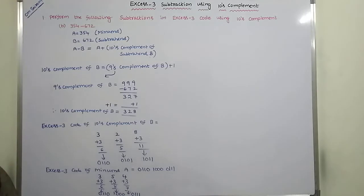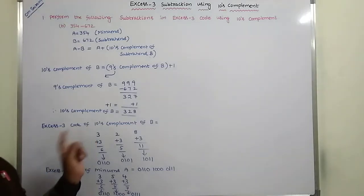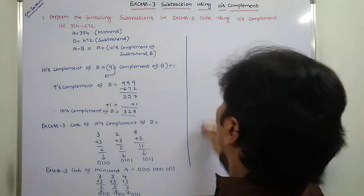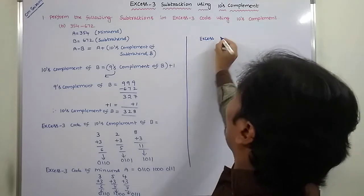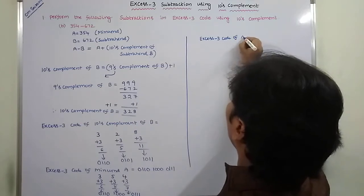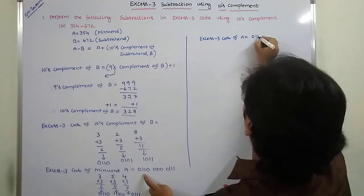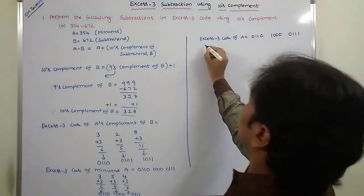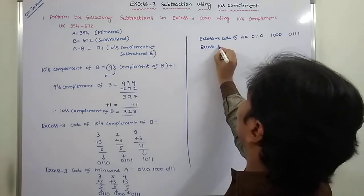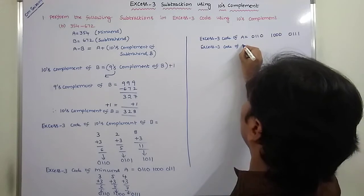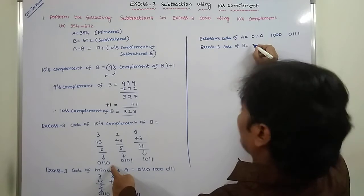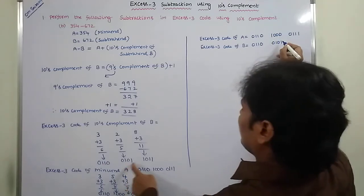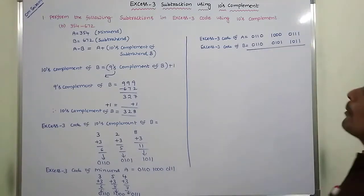Once we have the XS3 code of minuend A and the XS3 code of the ten's complement of B, we add these two XS3 numbers. XS3 code of A is 0110 1000 0111, and XS3 code of ten's complement of B is 0110 0100 1011. Now we perform the addition operation.